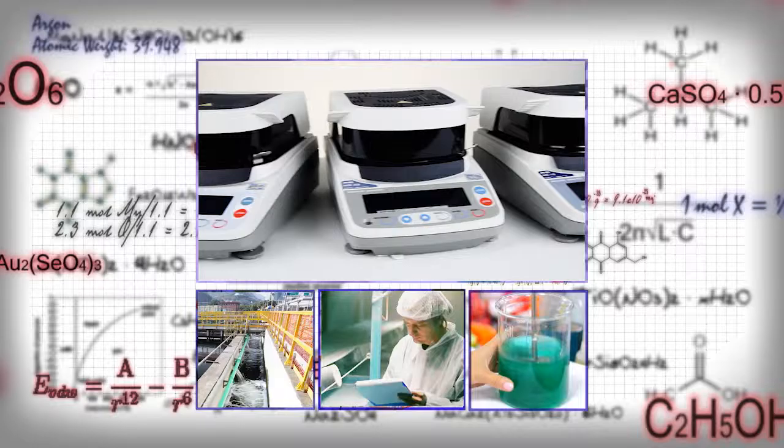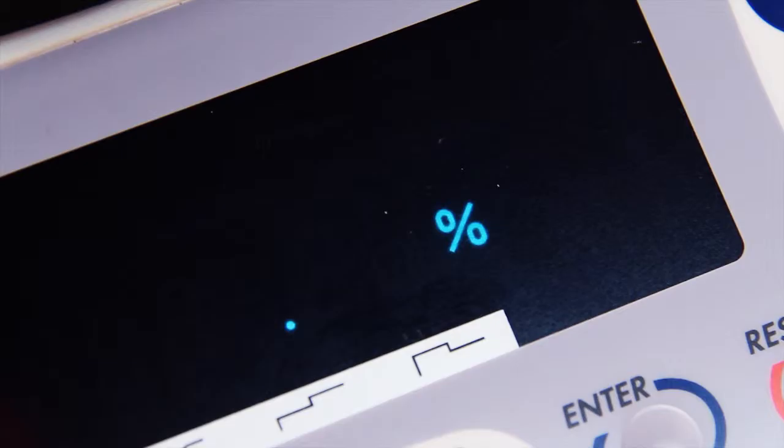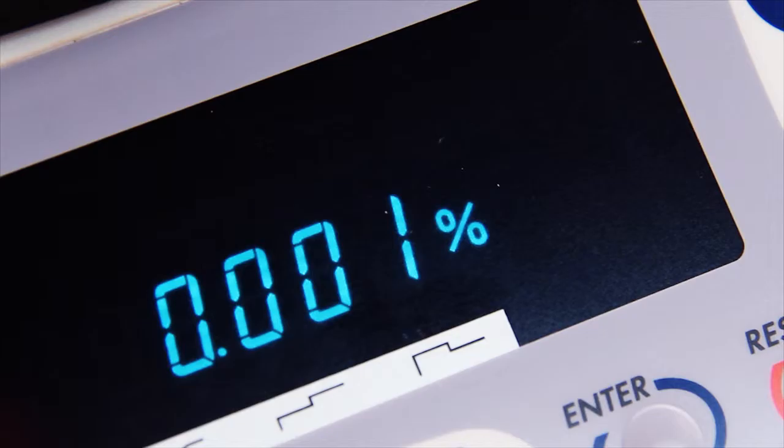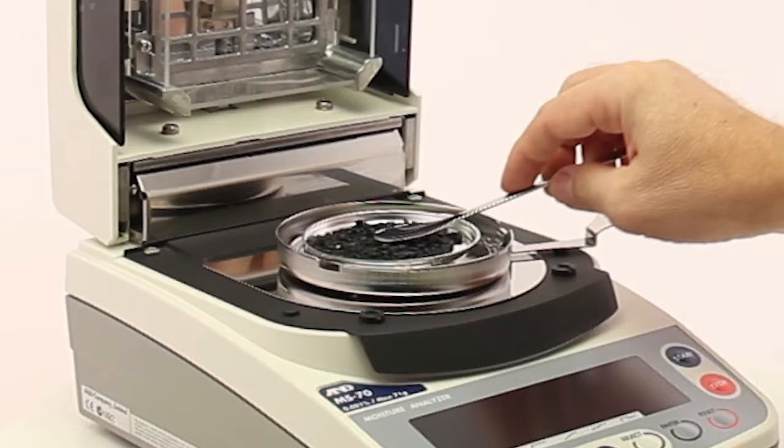The model MS-70 measures down to 0.001% moisture content with its resolution of 0.1 milligrams. Now, even challenging low moisture substances like plastic resins can be conveniently characterized.